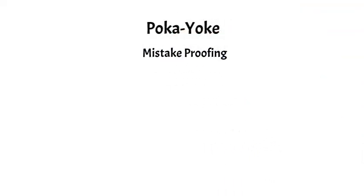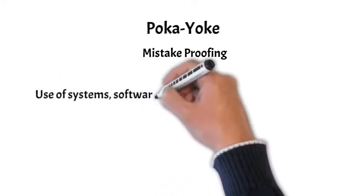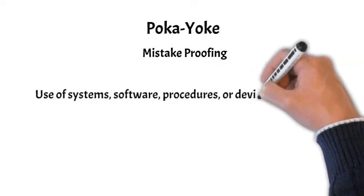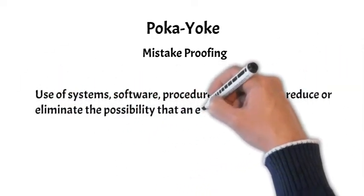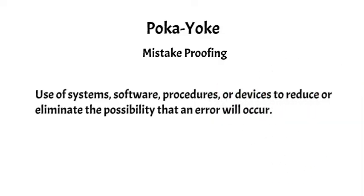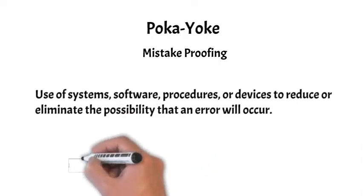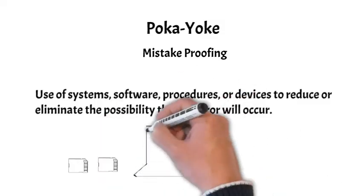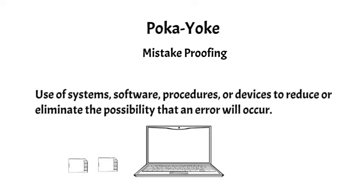Poka-Yoke is a Japanese term that can be translated as mistake-proofing. It typically involves the use of systems, software, procedures, or devices to reduce or eliminate the possibility that an error will occur or makes the error instantly noticeable once it does occur. Examples include the lane departure warning system in an automobile, SD cards that can only be inserted in one direction, and the handle on a lawnmower that will stop the blade from rotating when it is released by the operator.